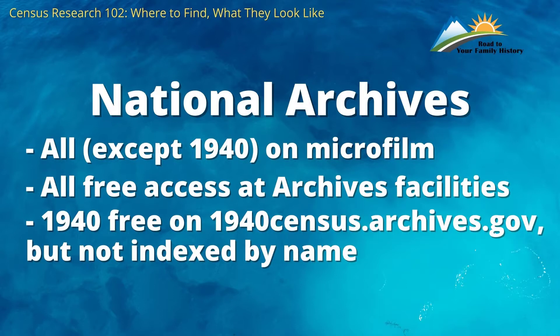So where do we find these vital census records for doing your family history? First of all, you can find them at the National Archives in Washington, D.C. or any of their satellite offices around the country — I think maybe five or six different ones. They will have all the census records on microfilm except for the 1940 census. You can go in there, load up the microfilm on their readers, and start cranking away.